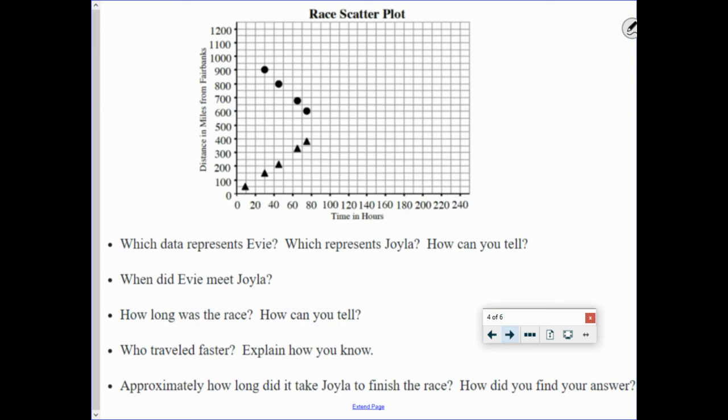But we have five questions. All of the answers to these five questions are on this graph. You're just going to have to use some work, some analysis, some figuring things out. Think of it as a puzzle. So which data represents Evie? Which represents Joila? And how can you tell?